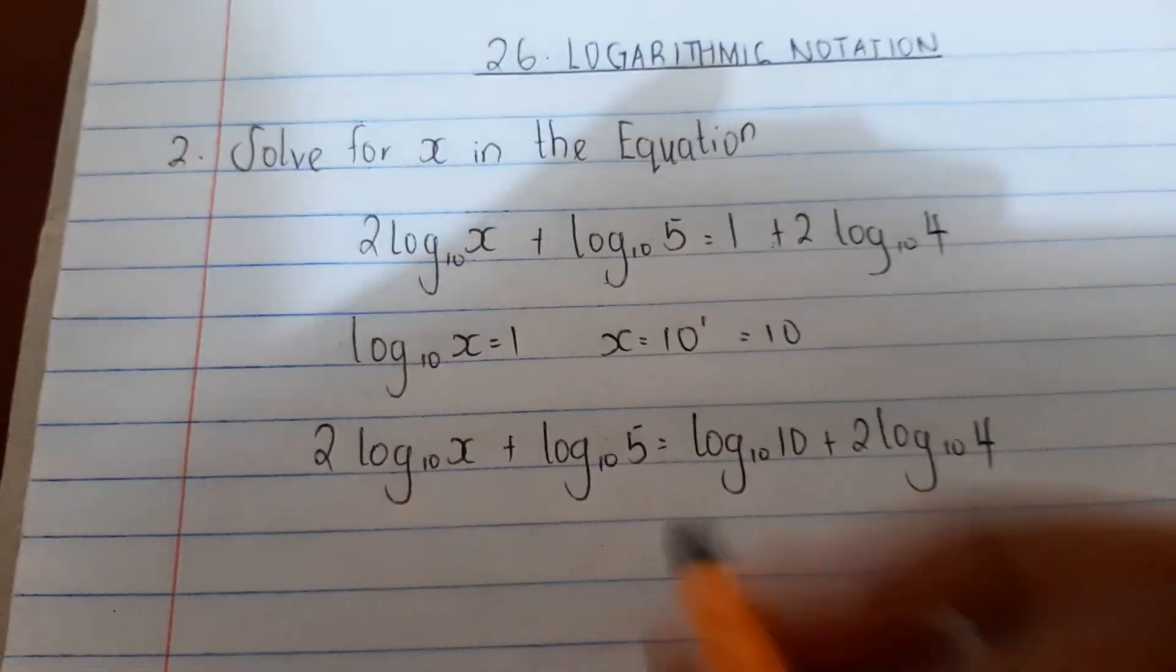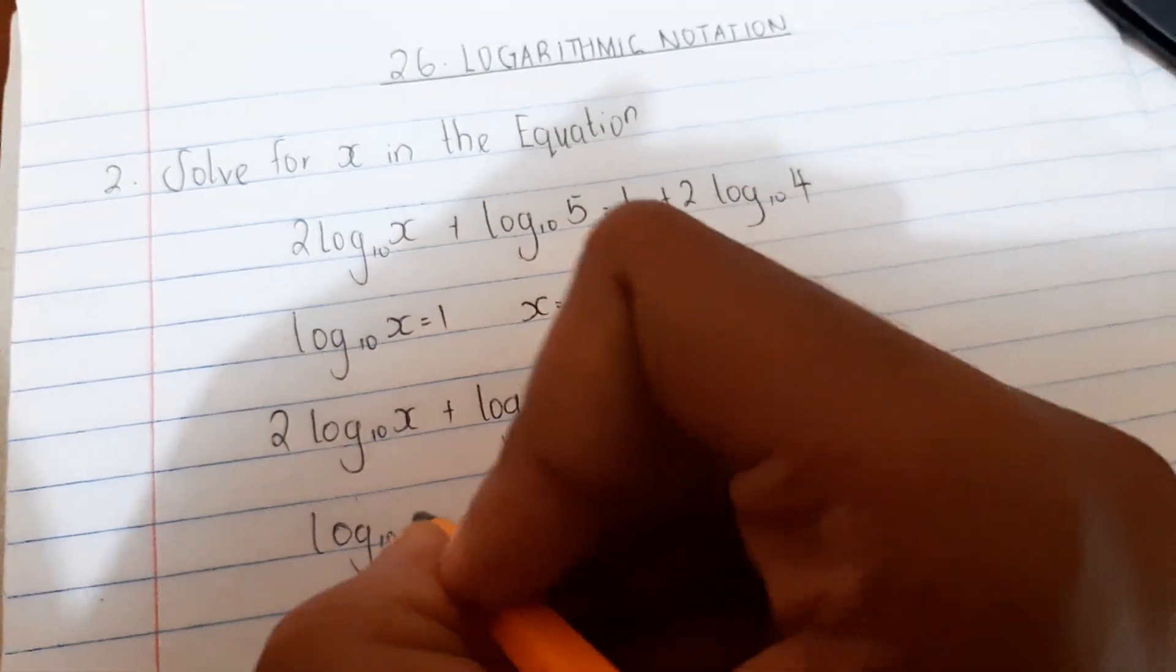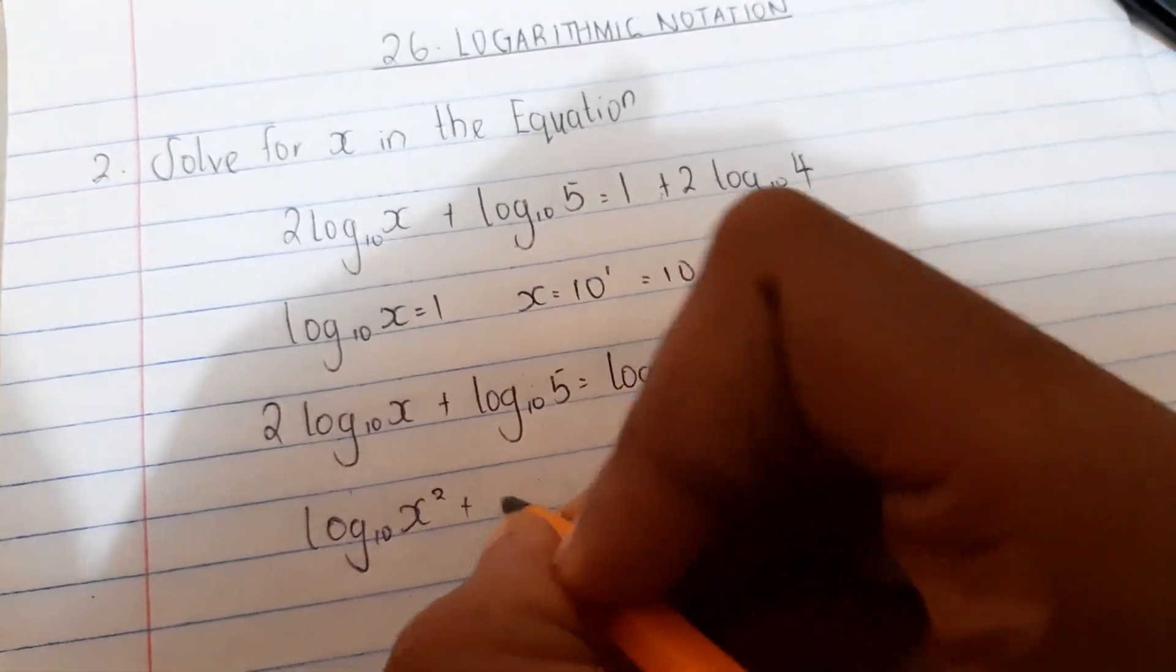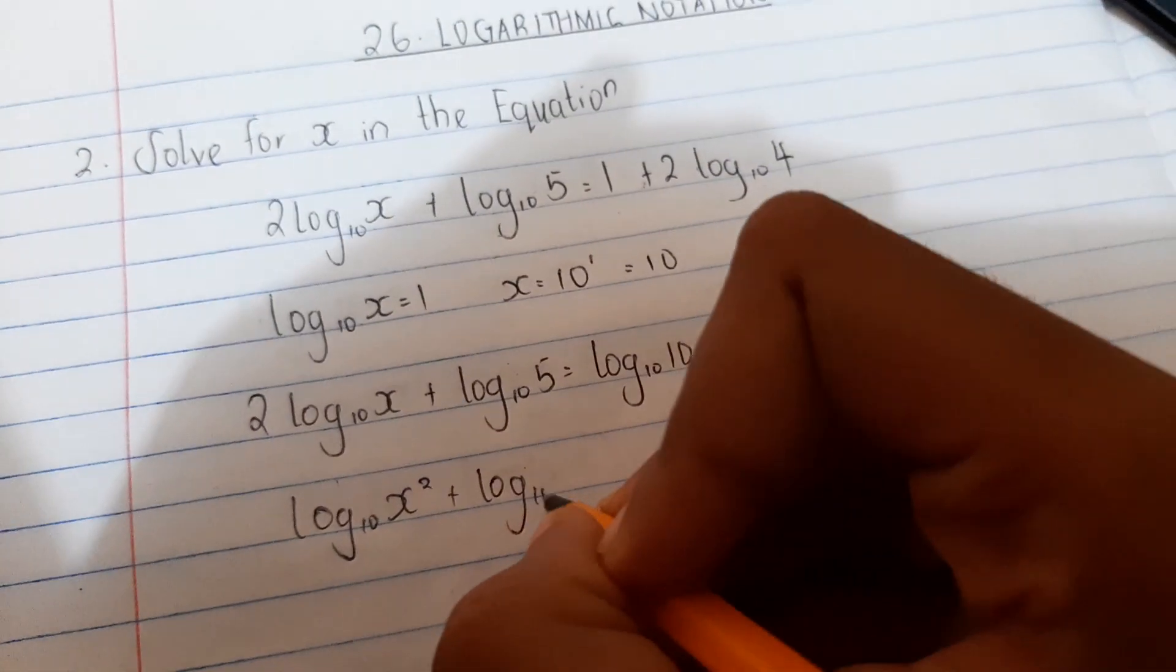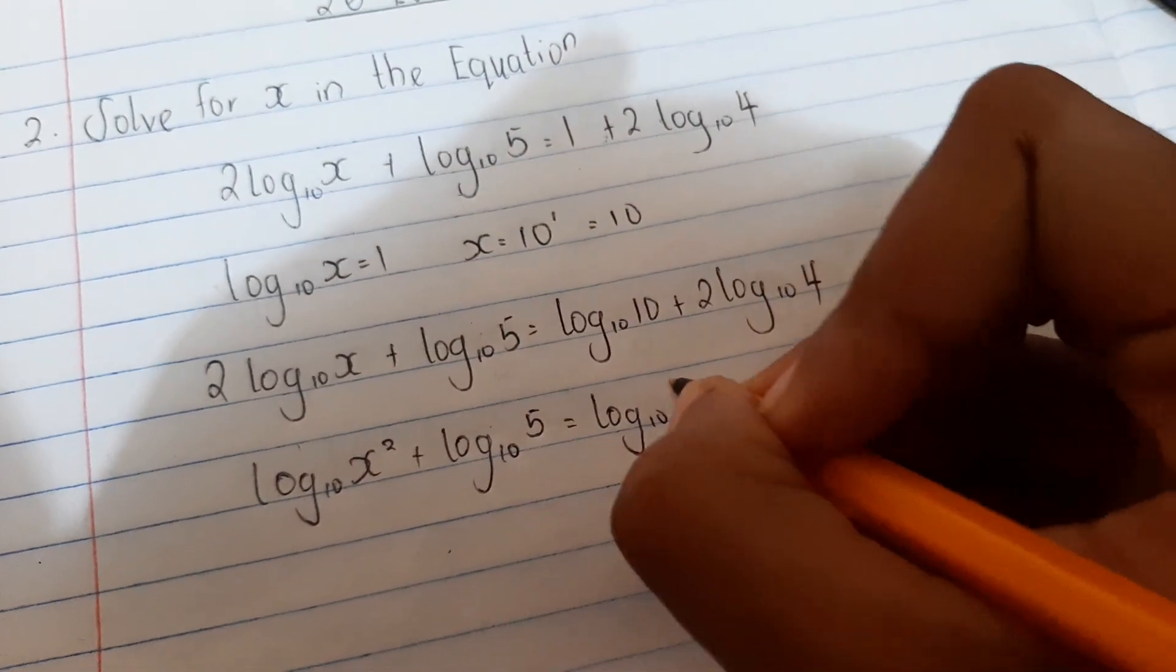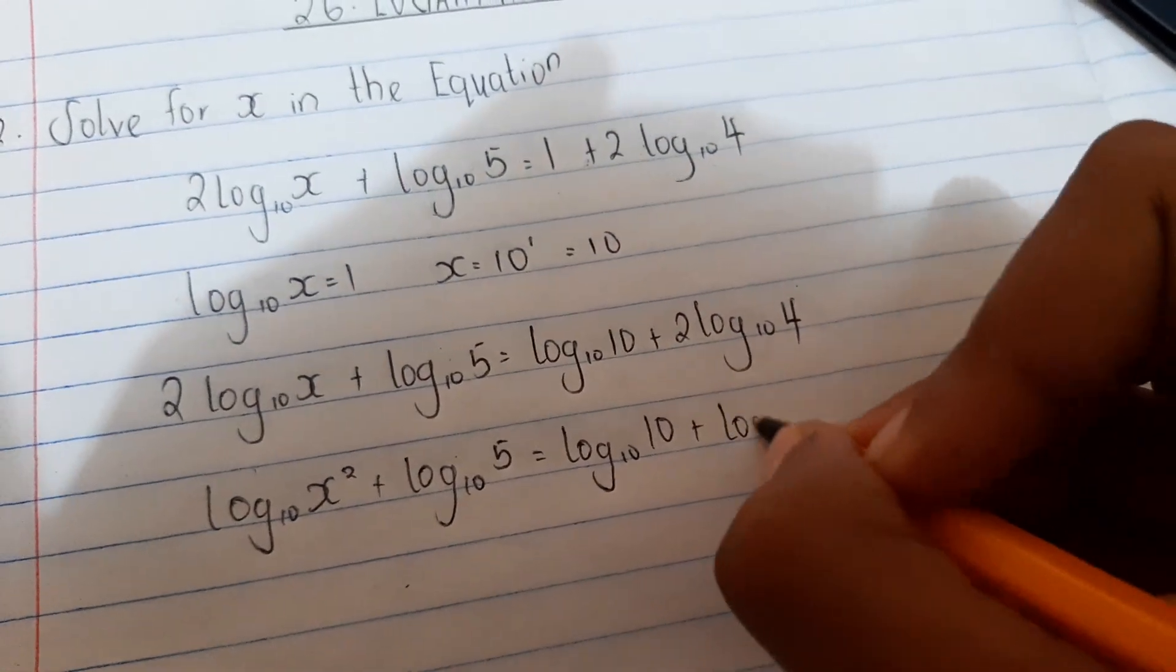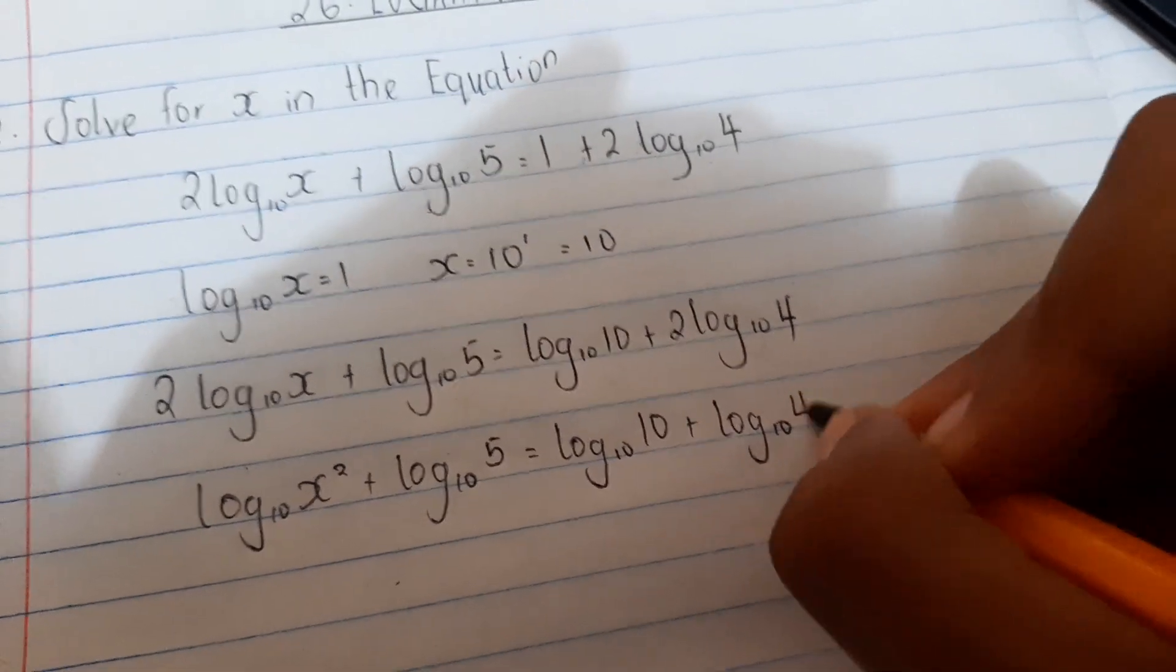Next, the 2 coefficient becomes an exponent. We get log base 10 x squared plus log base 10 5 equals log base 10 10 plus log base 10 4 squared.